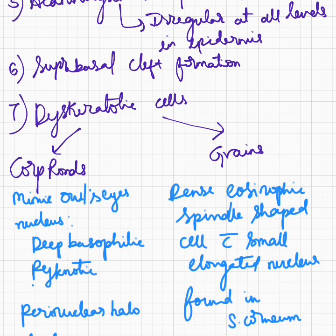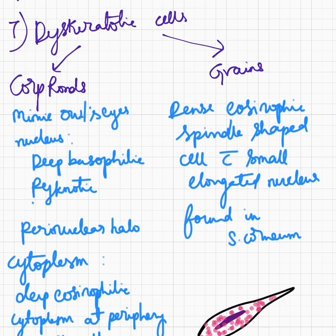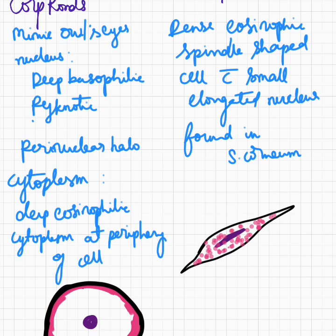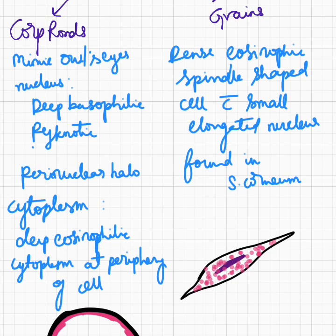Dyskeratosis means faulty and premature keratinization of individual keratinocytes. Two types of dyskeratotic cells can be seen: corps ronds and grains. Corps ronds mimic owl's eyes — the nucleus is deeply basophilic and pyknotic with a perinuclear halo, and the cytoplasm is deeply eosinophilic and present at the periphery of the cell. Grains are dense eosinophilic spindle-shaped cells with a small elongated nucleus, and they are found in the stratum corneum.